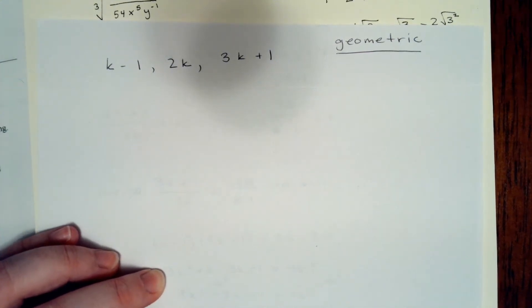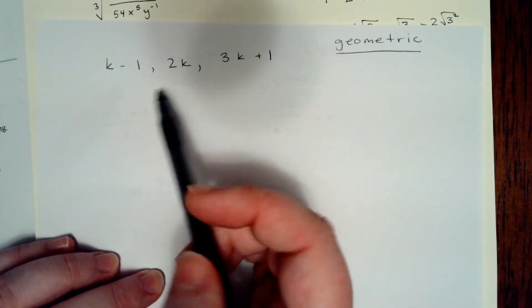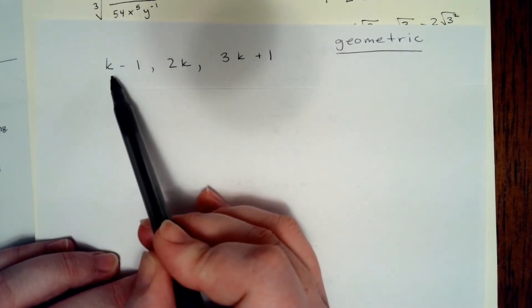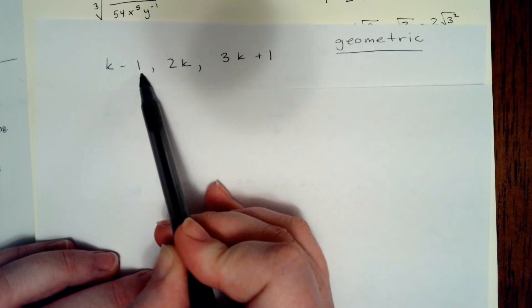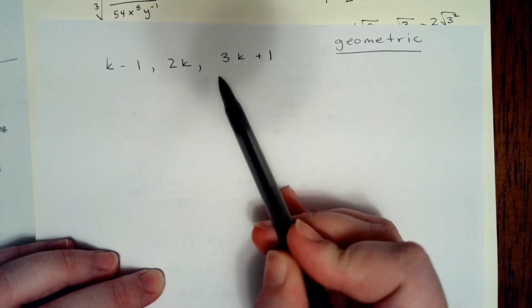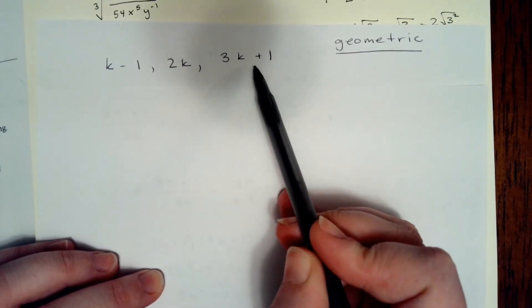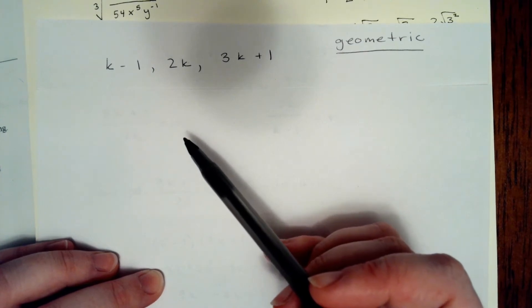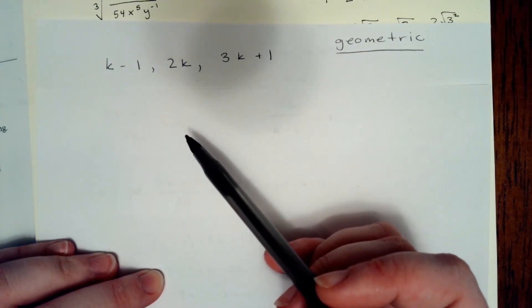Alright, so now we're looking at geometric sequences. We're looking at the sequence k minus 1, 2k, 3k plus 1, and we're asked to solve for k and find the next two numbers of the sequence.